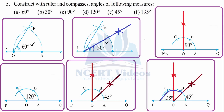For 90 degrees — start with 60 degrees by opening radius OA to cut at B, then repeat to cut at C. Take the bisection between B and C to get 90 degrees. Open with the same radius and wherever the arcs cut, that is your 90 degrees — just connect it. This is the 90 degree construction with the help of compasses.